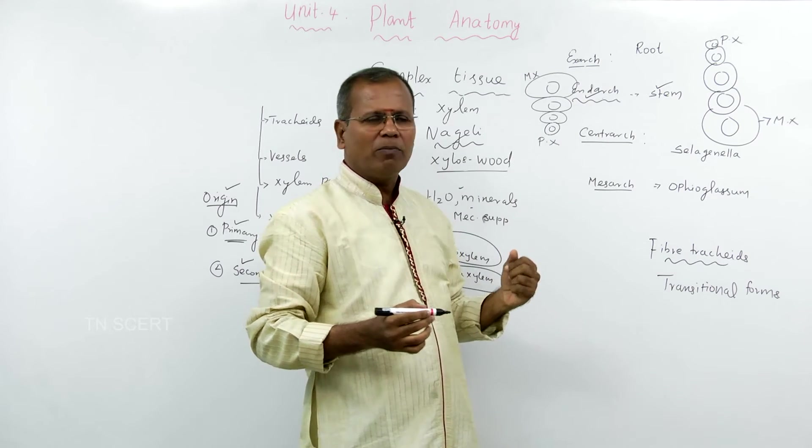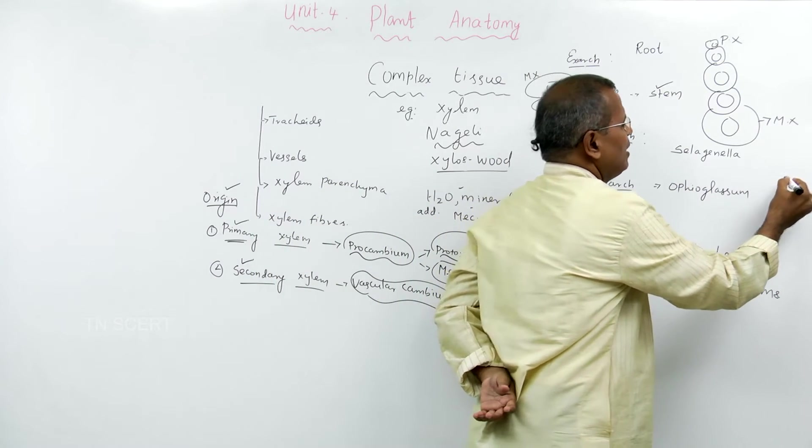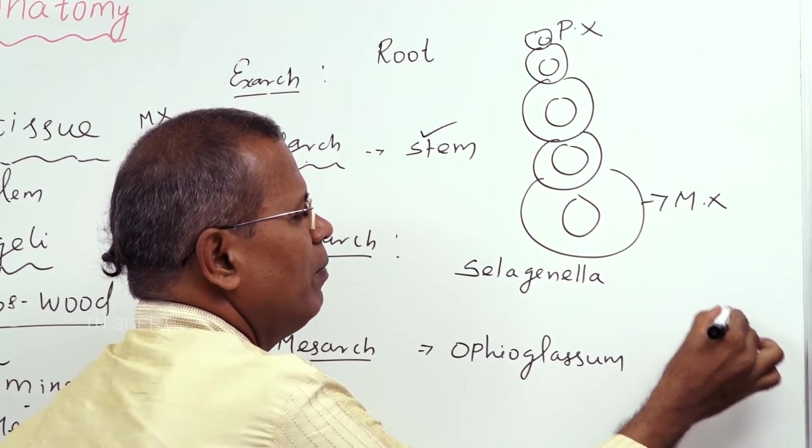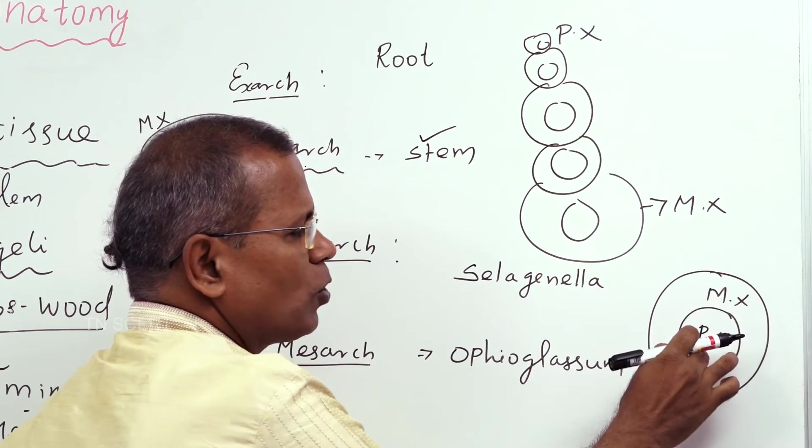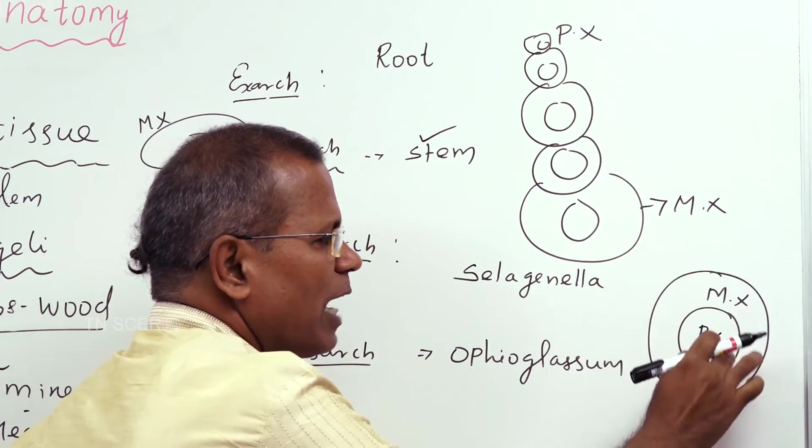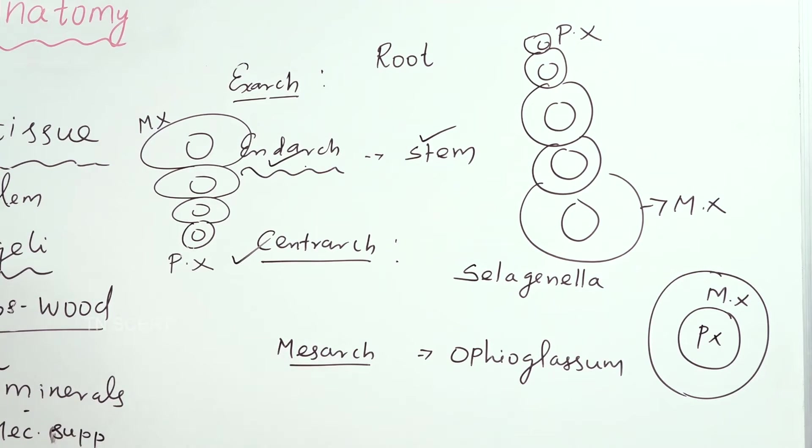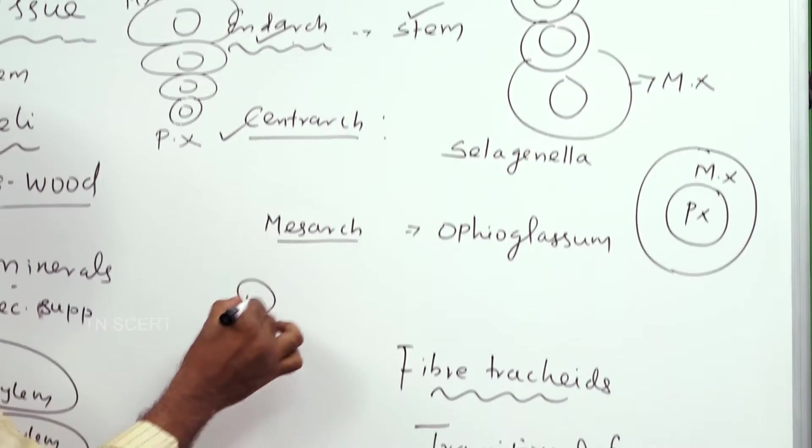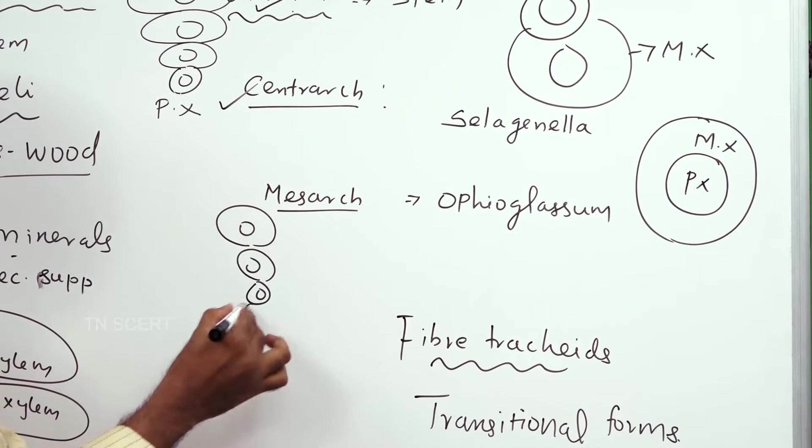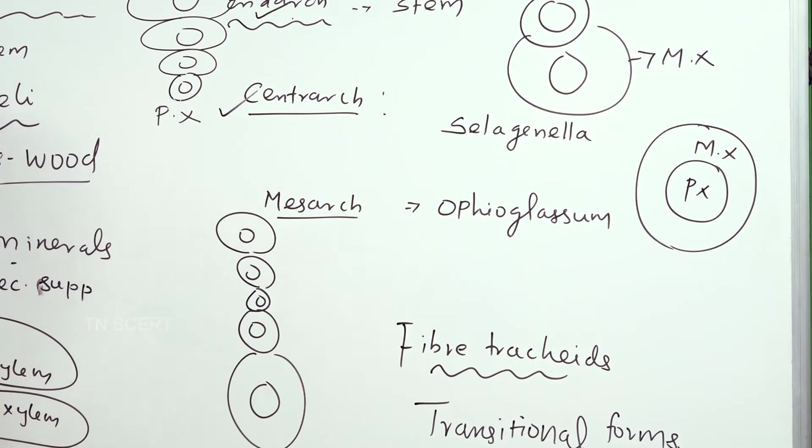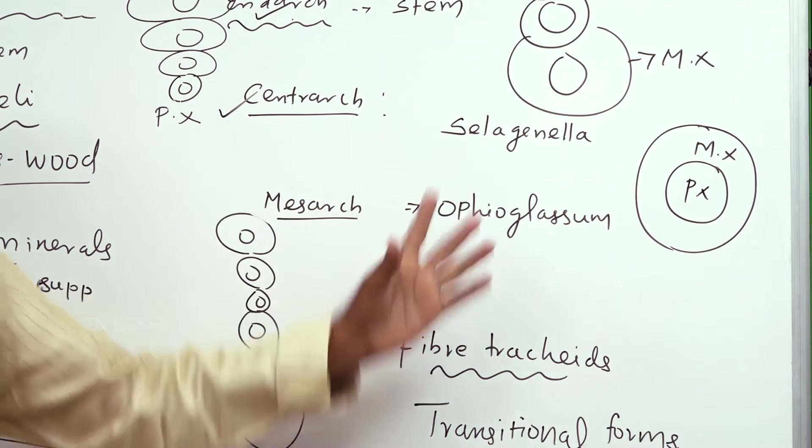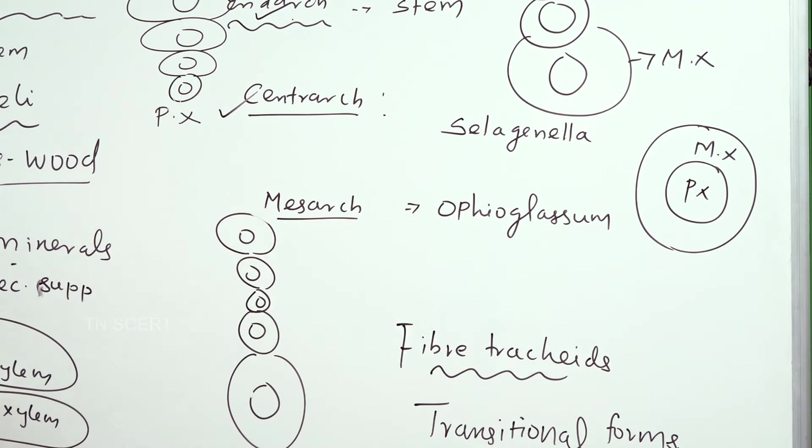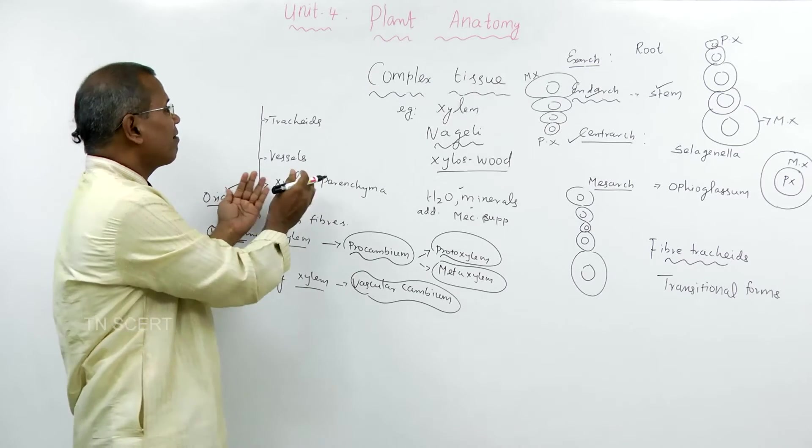The plant like Selaginella, center protoxylem surrounded by metaxylem. In the center it is centrarch. The plant like Ophioglossum, the protoxylem is in the center. On both sides, it is surrounded by metaxylem. In the middle protoxylem and both sides metaxylem, it is mesarch. This is the types. Now the description.